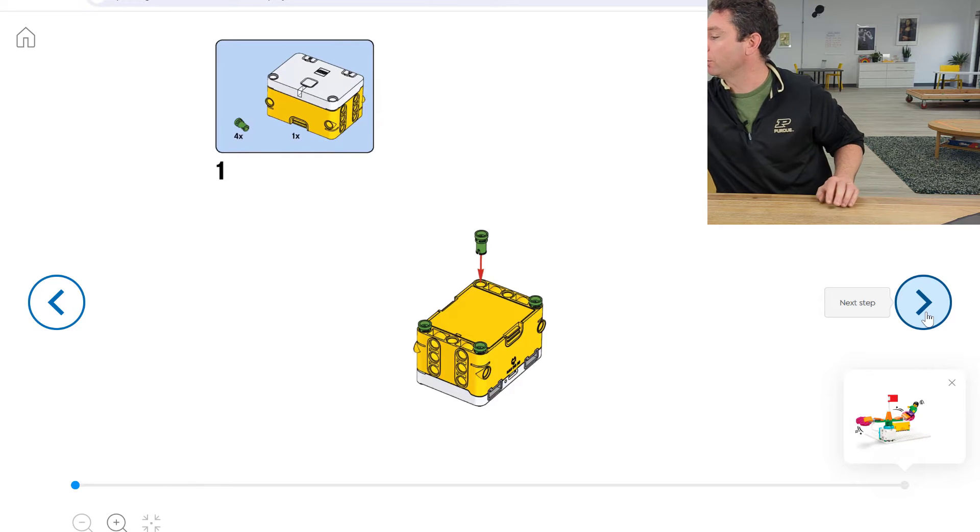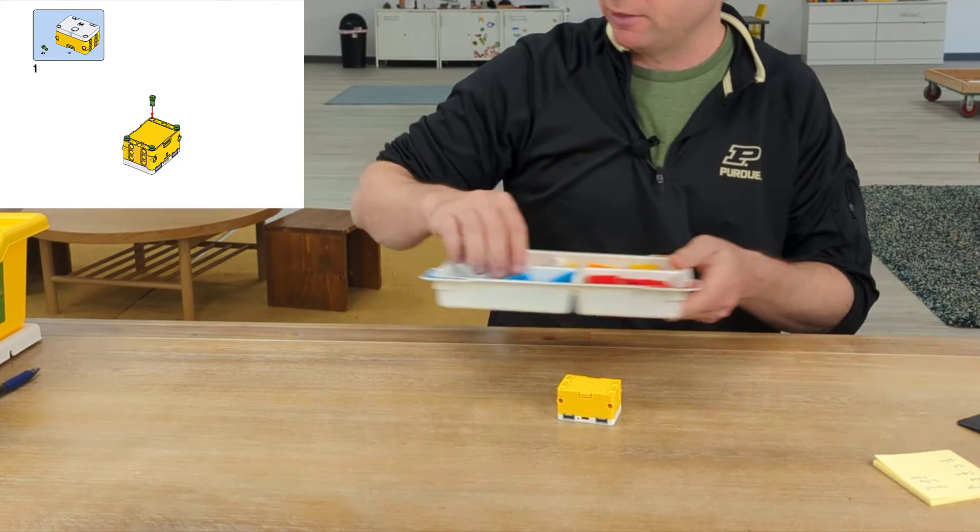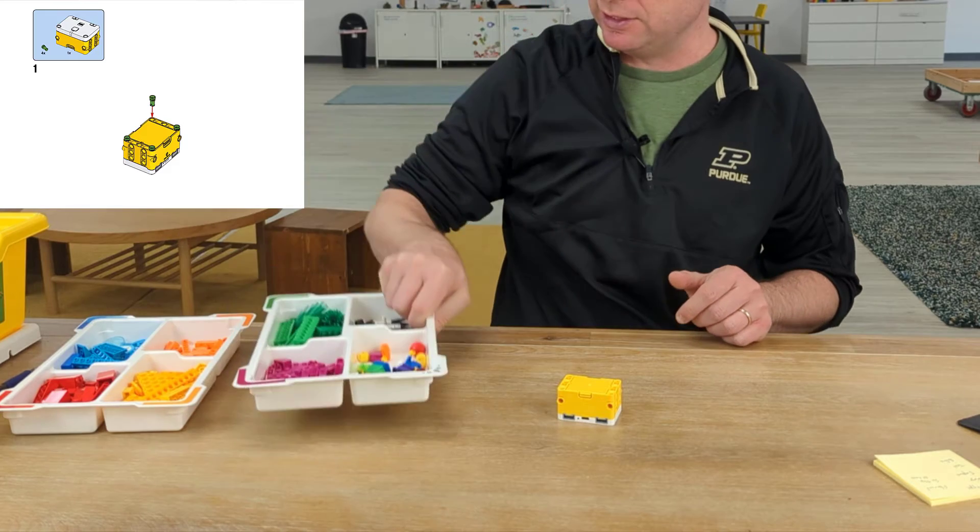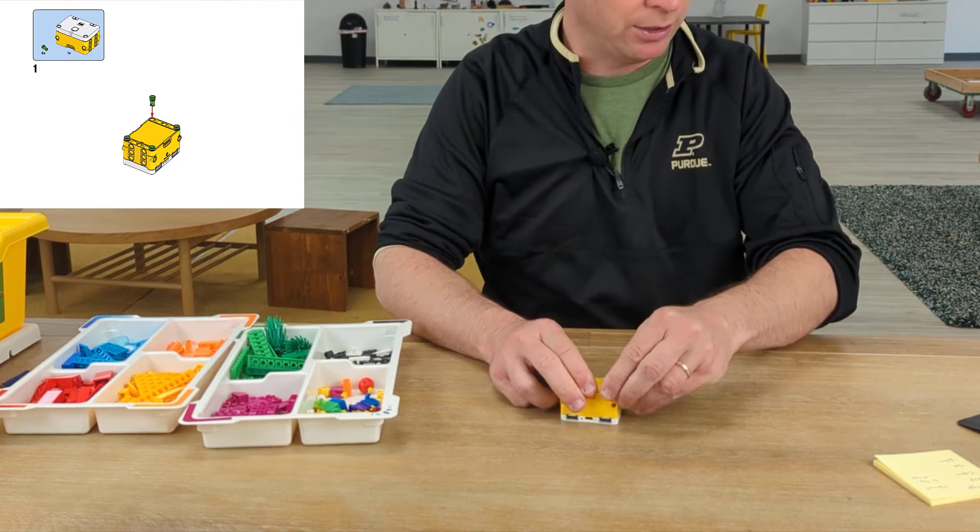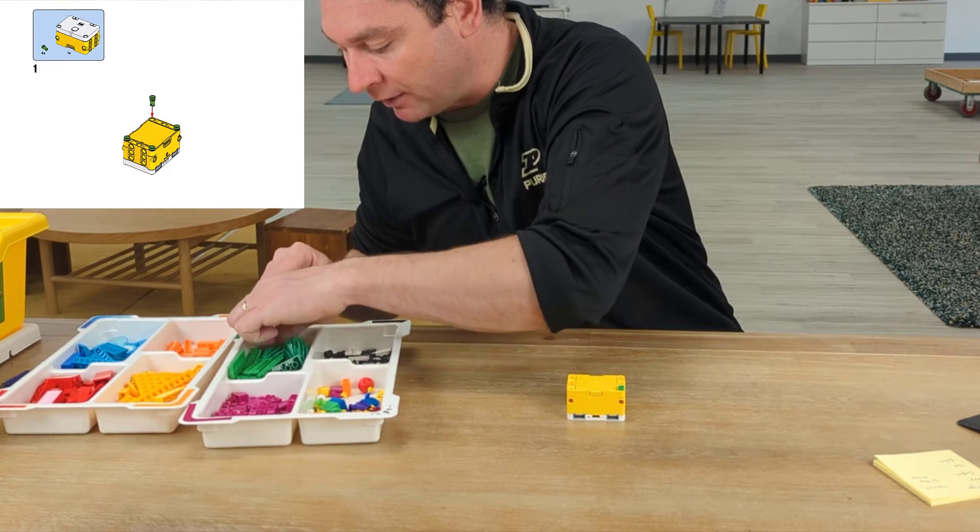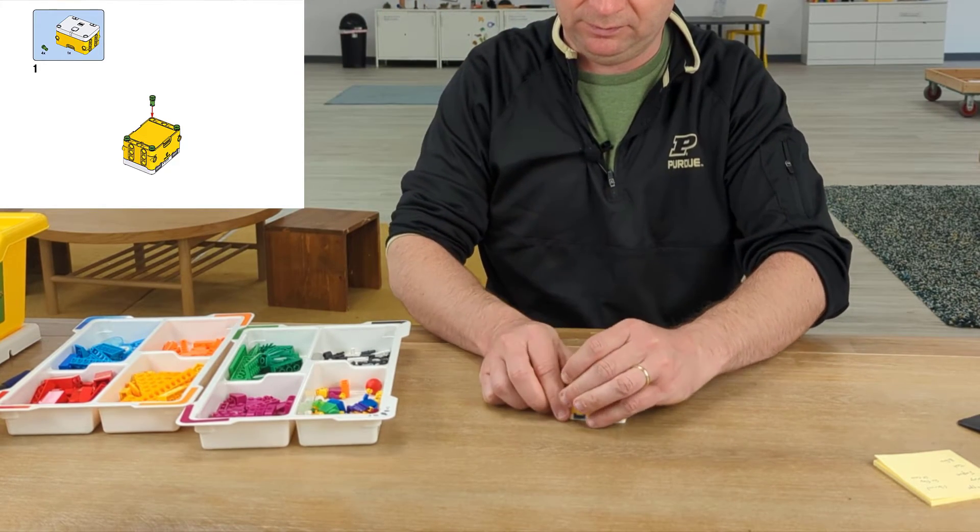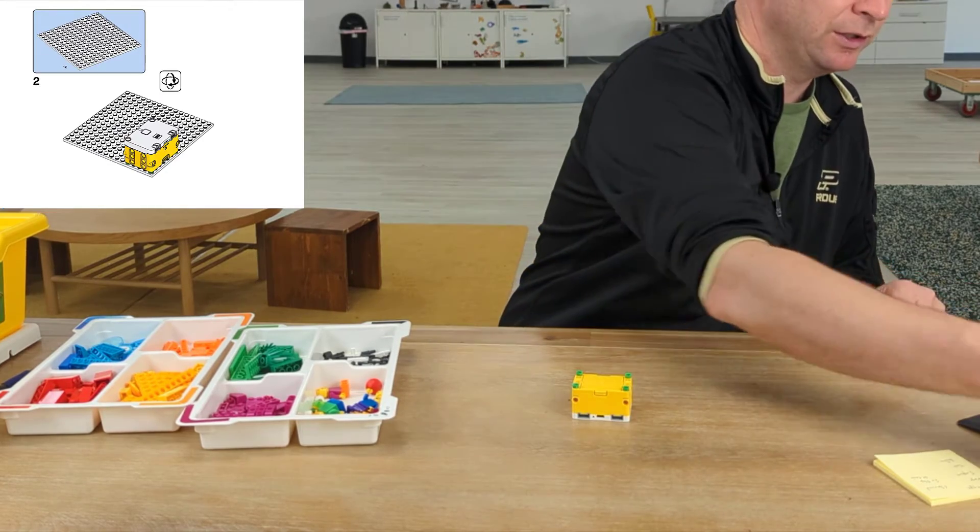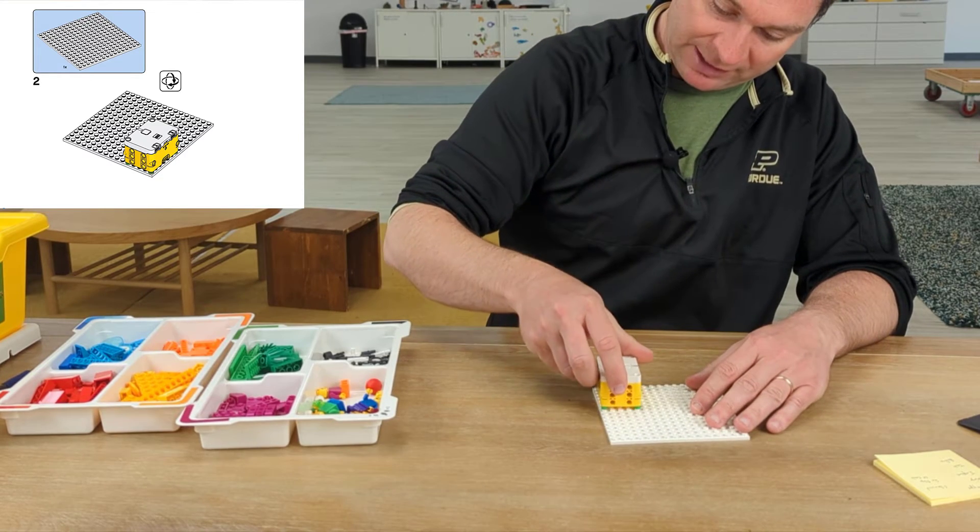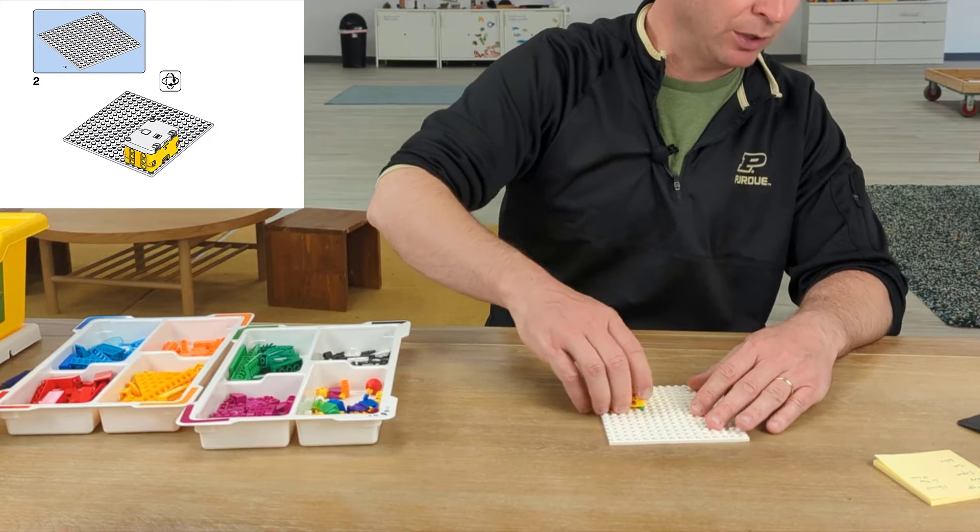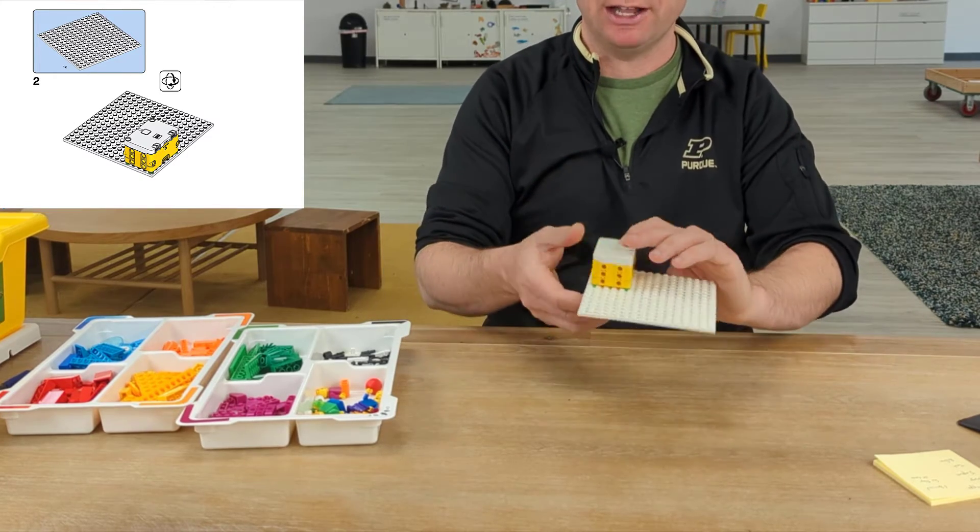We're going to start with our hub, and remember, our hub is the brains of our robot. So I turn it upside down, and it looks like I'm going to need four of those little green pegs that let me stick this hub right onto any of the base plates that we're using. On to the next step, and we'll be using the large base plate today. If you're building with another family member or somebody else, a great way to do this is to take turns so one person does all the even steps, one person does all the odd steps.